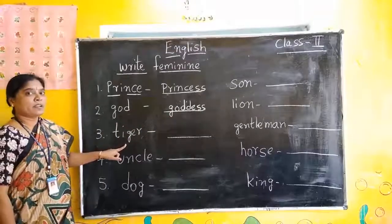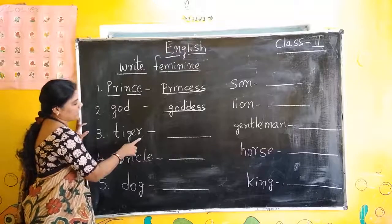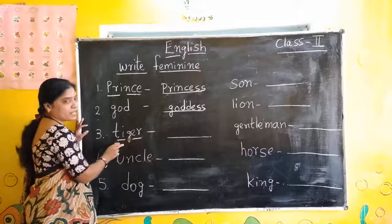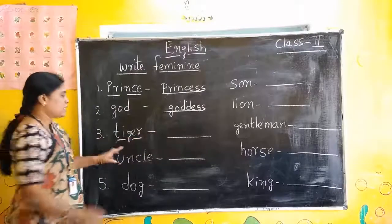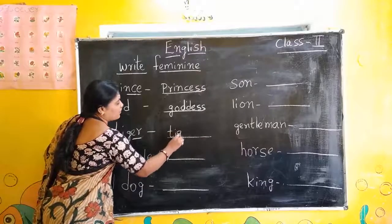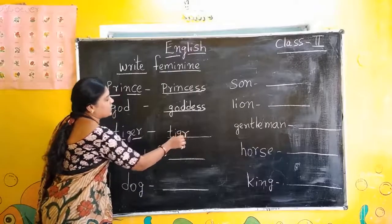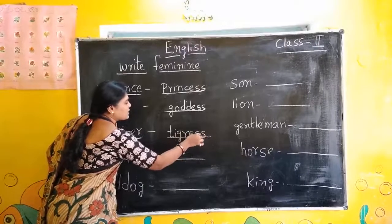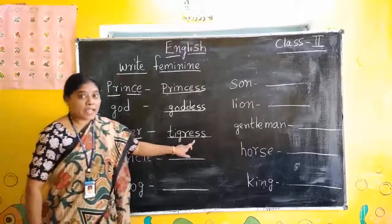Tiger — Tigress. T-I-G-E-R, Tiger. Tigress: T-I-G-R-E-S-S. Gress — G-R-E-S-S. Tiger, Tigress.